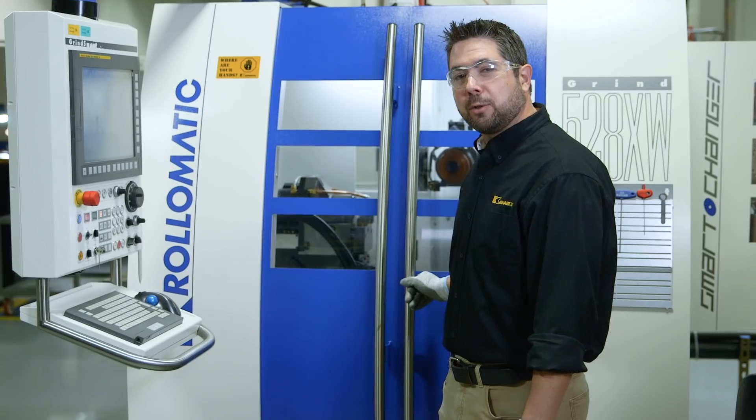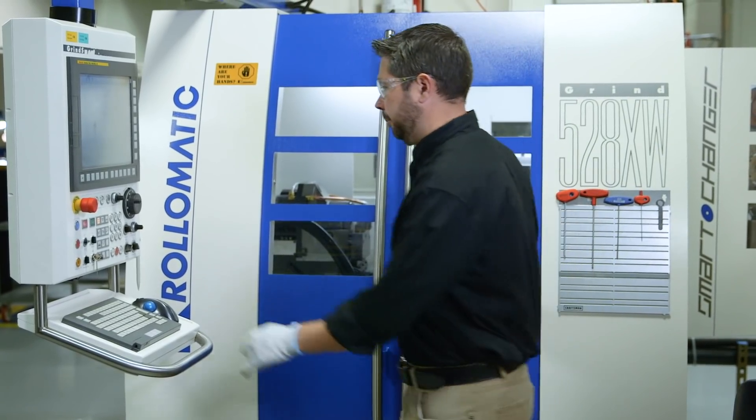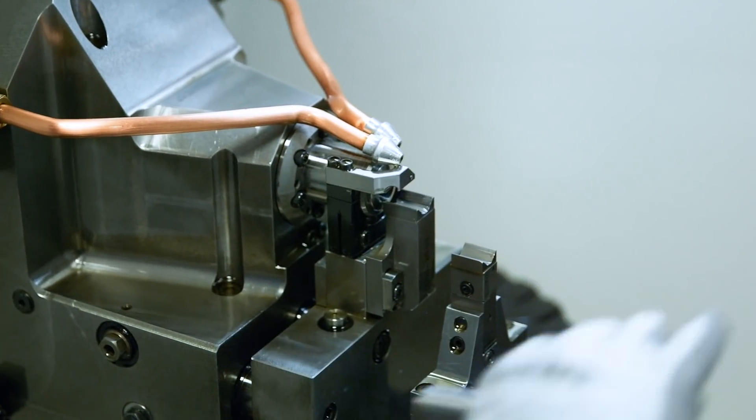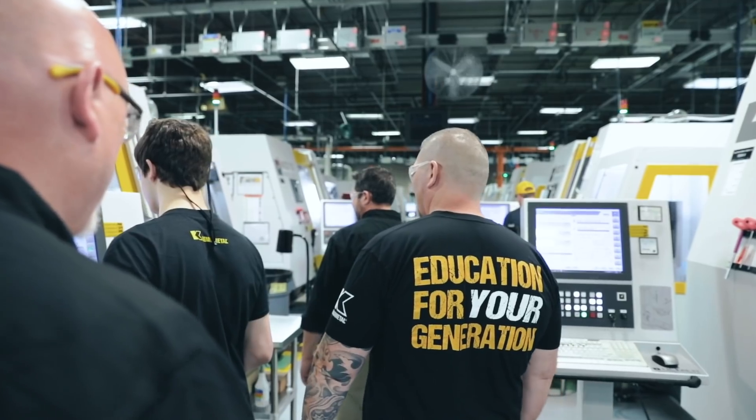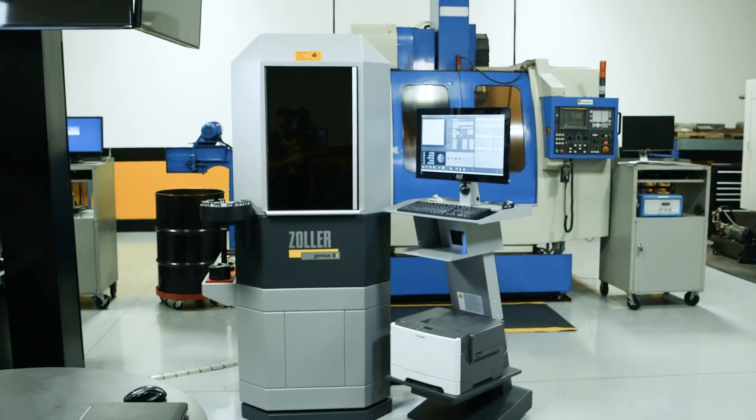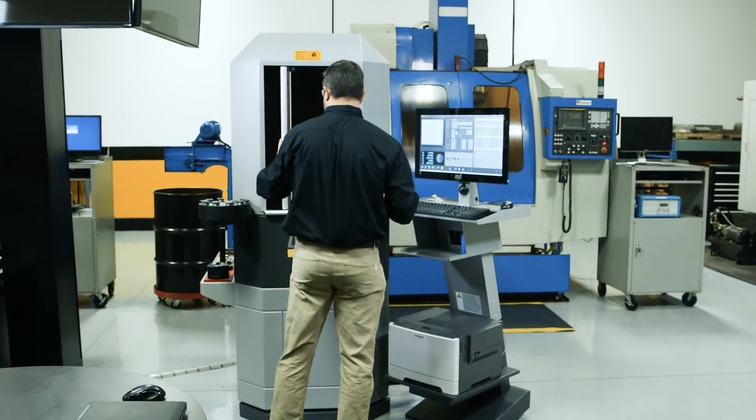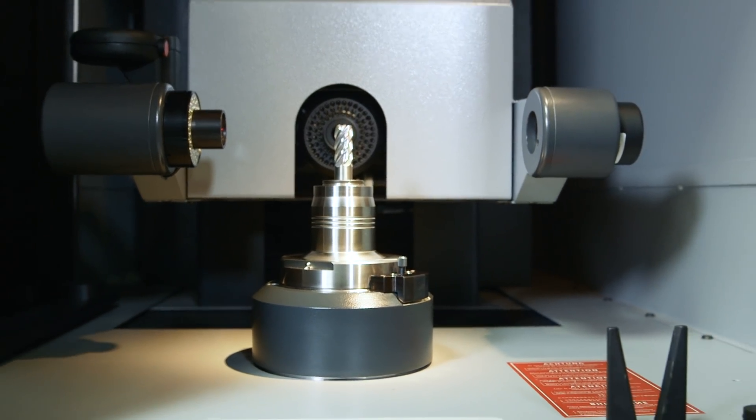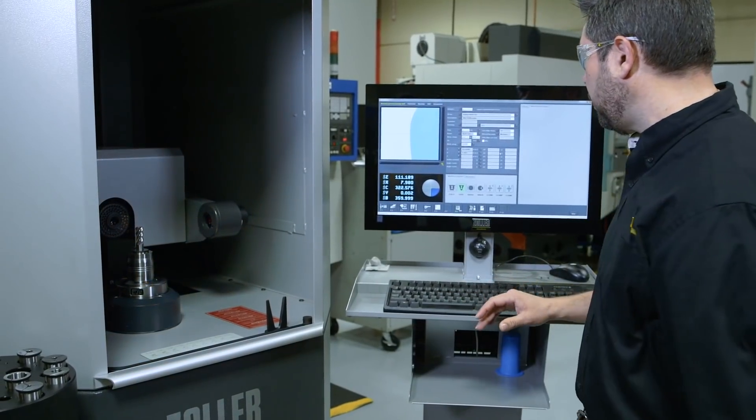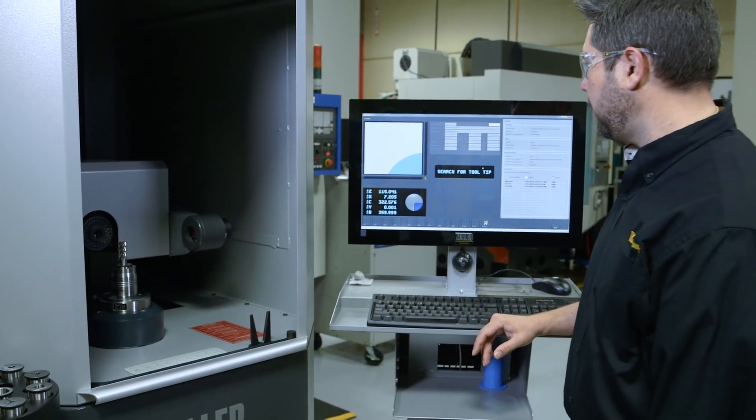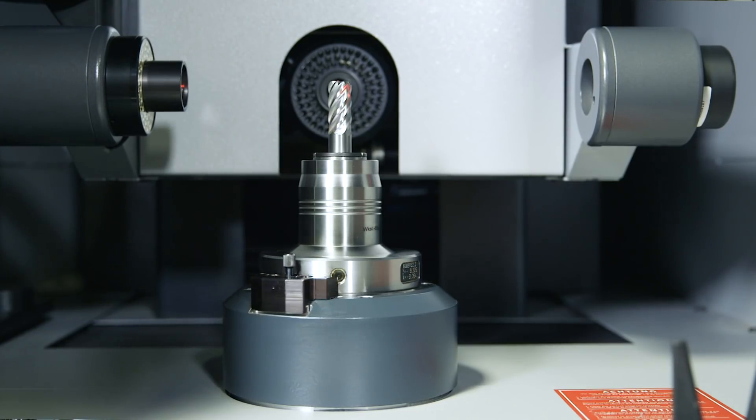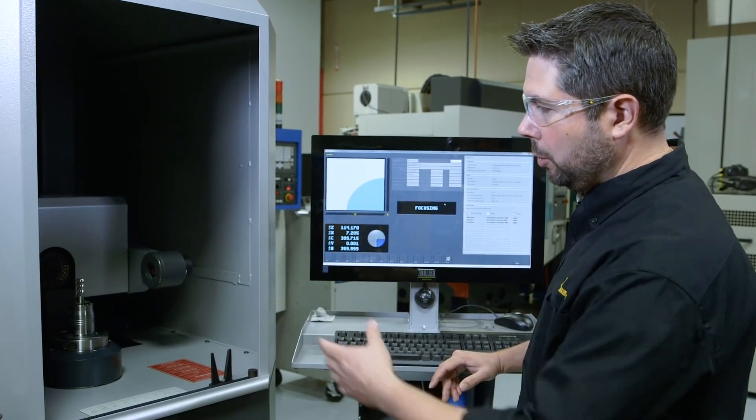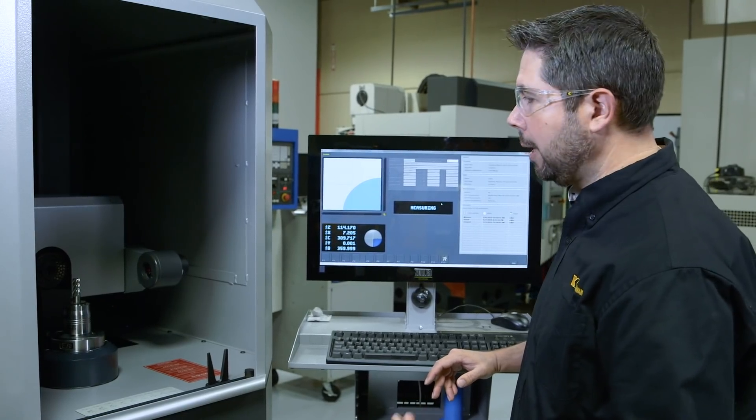There you have it. The cycle's finished. Let's go inspect it. We're going to start the inspection process, run through a couple steps here. Machine's going to find the tool. This is a full CNC inspection machine. Needs to know where the tool is. We're holding the tool in a hydraulic holder, so it's really accurate.